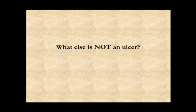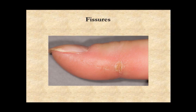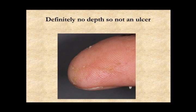So what else is not an ulcer? An ulcer over calcification should not be included as a digital ulcer in any therapeutic trial. If there is any doubt as to whether calcification is present, that digit should be x-rayed to see if there is calcification directly under the skin lesion. Fissures on a digit are not ulcers — this is a good example of a lesion which is a fissure and should not be determined to be a digital ulcer. In this digit there are multiple small areas of scab, but it is quite clear that there is no depth present, so none of these areas should be determined to be an ulcer.